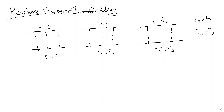I want you to imagine, as you can see over here on the first graph, that we have three columns. We have a construction that is completely stable. In the time increment of zero — the beginning — we don't have any temperature, and therefore there are no stresses anywhere.